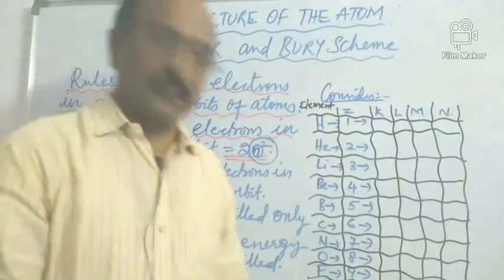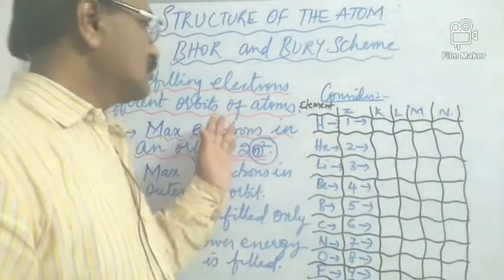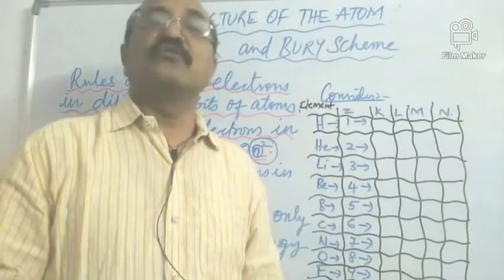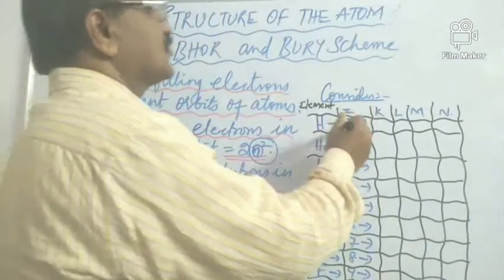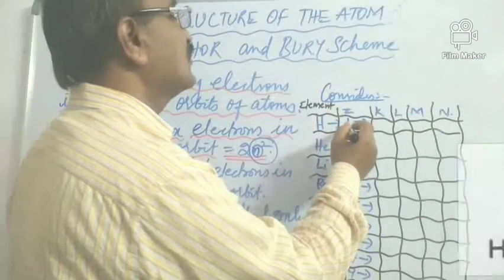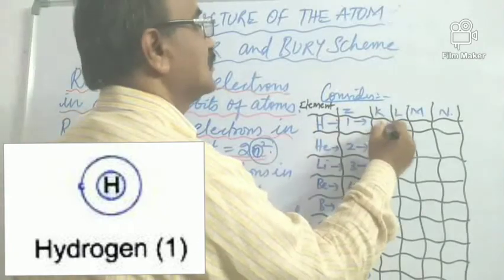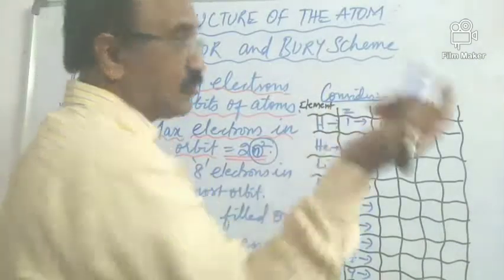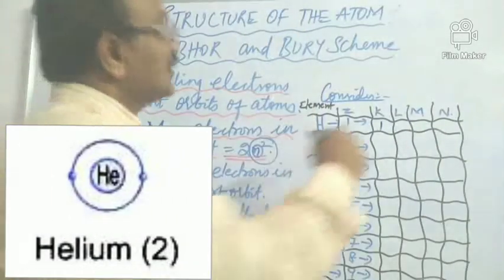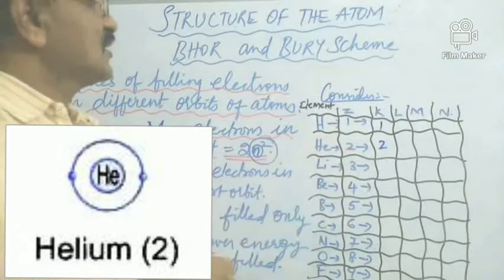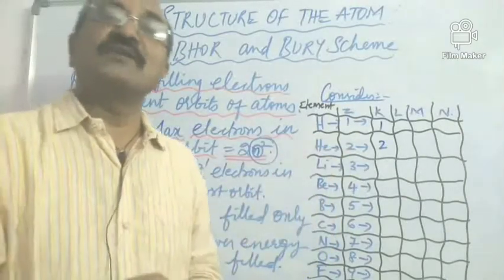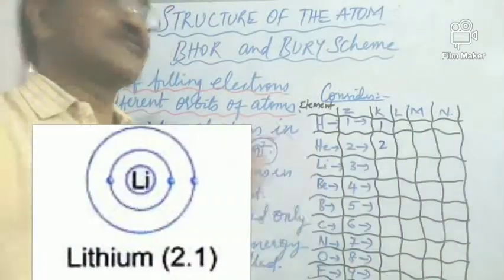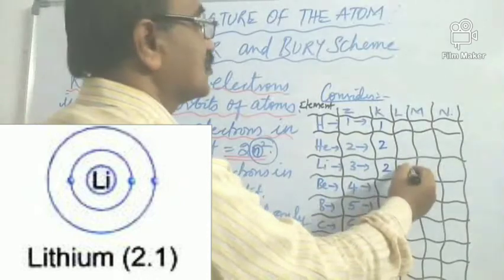Helium has 2 electrons, and the first shell can take 2, so both electrons go into the first orbit. Lithium has 3 electrons — the first two go into the K shell and the next electron goes into the L shell. Beryllium has atomic number 4, so 4 electrons: the first shell takes 2 electrons and the remaining 2 go into the L shell.